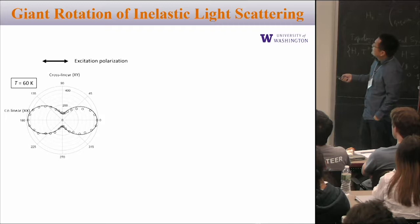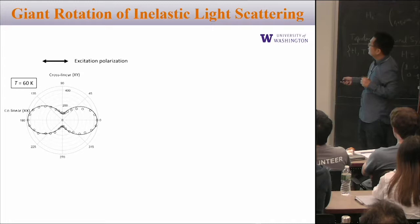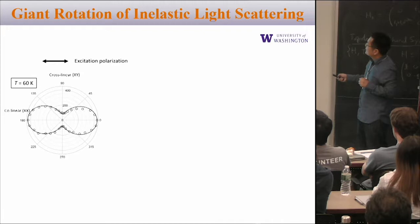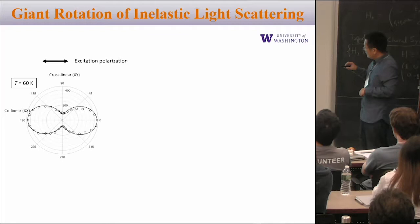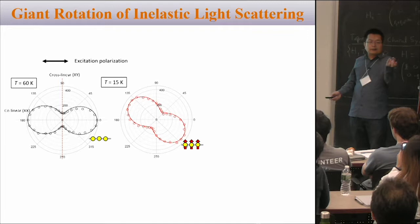The excitation is horizontally polarized, and we measure the linear polarization — basically doing linearly polarization-resolved measurements for the inelastic light scattering. At 60 Kelvin, the Raman scattering is in the same polarization as the excitation polarization, consistent with A1g mode. What's surprising is doing the same measurements at 15 Kelvin, where there's magnetic order: the linear polarization actually rotates away from the excitation polarization direction.